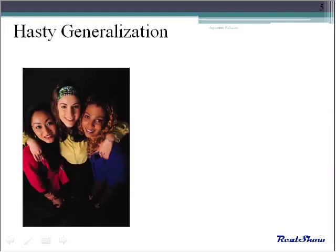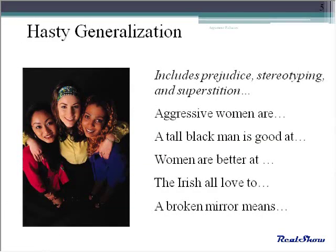First up is hasty generalization. If I argue that the Republican Party is the party of no, I'm encouraging you to ignore detail and look at a broad stroke. Looking at the list on this slide, you might note some hasty generalizations that are commonly used.